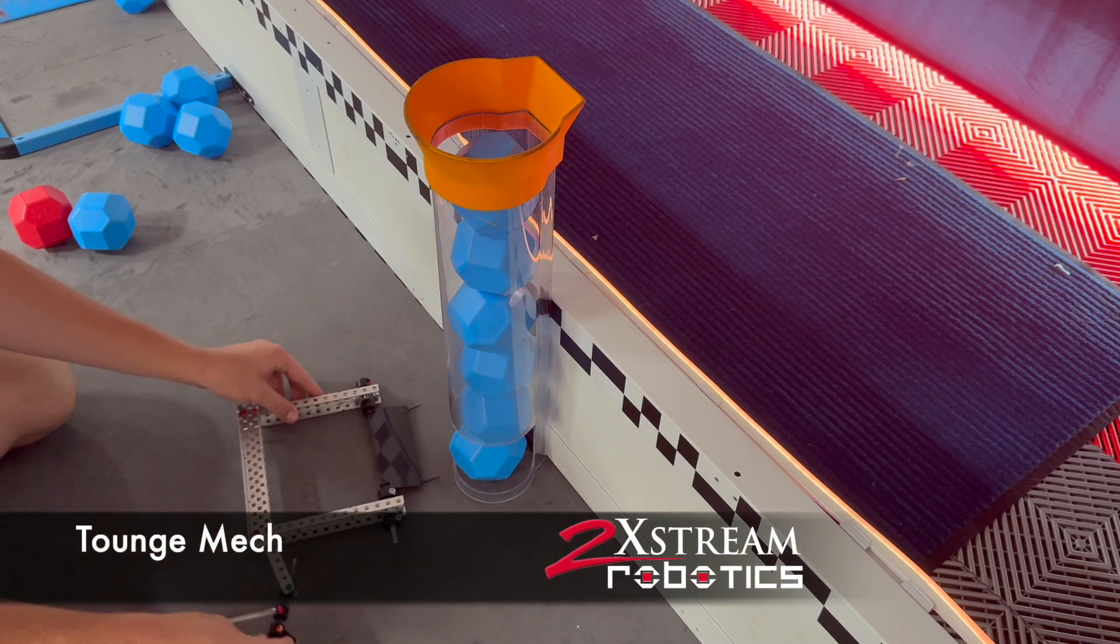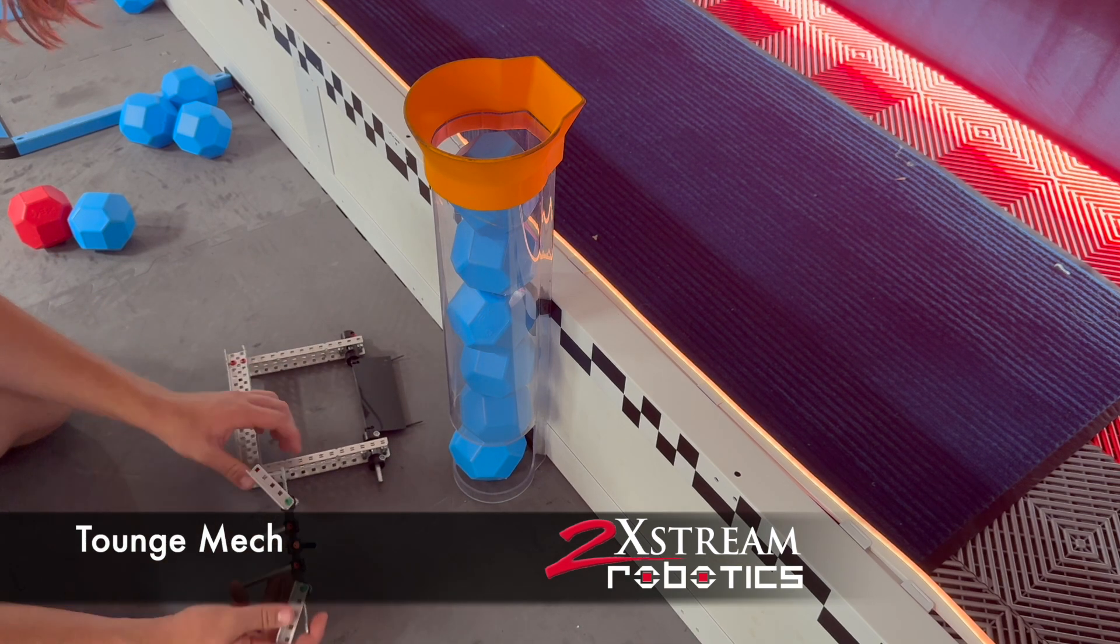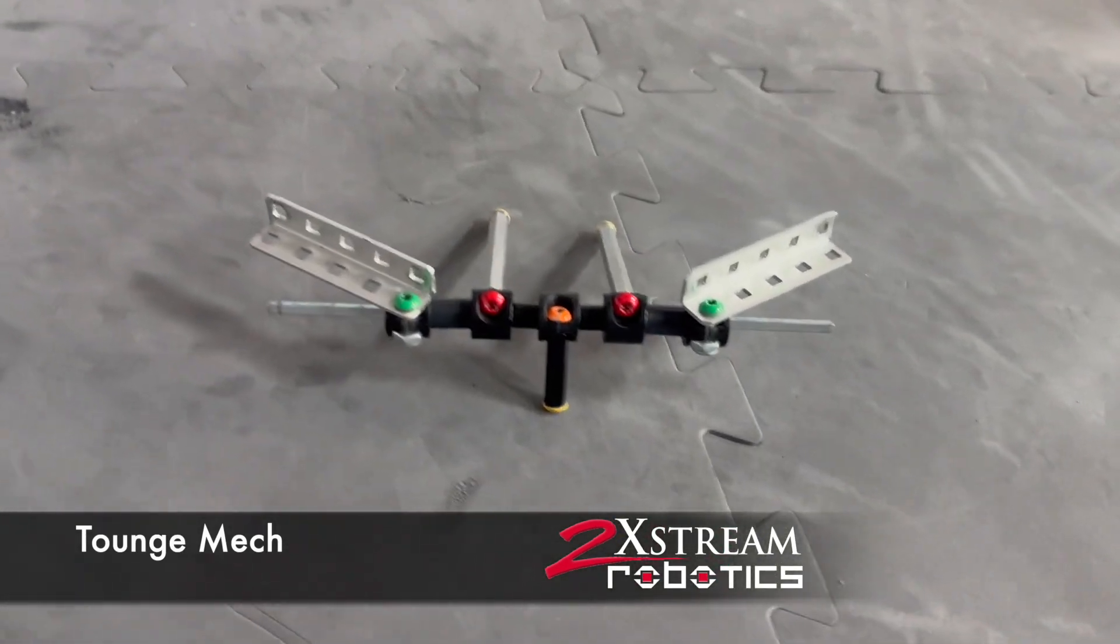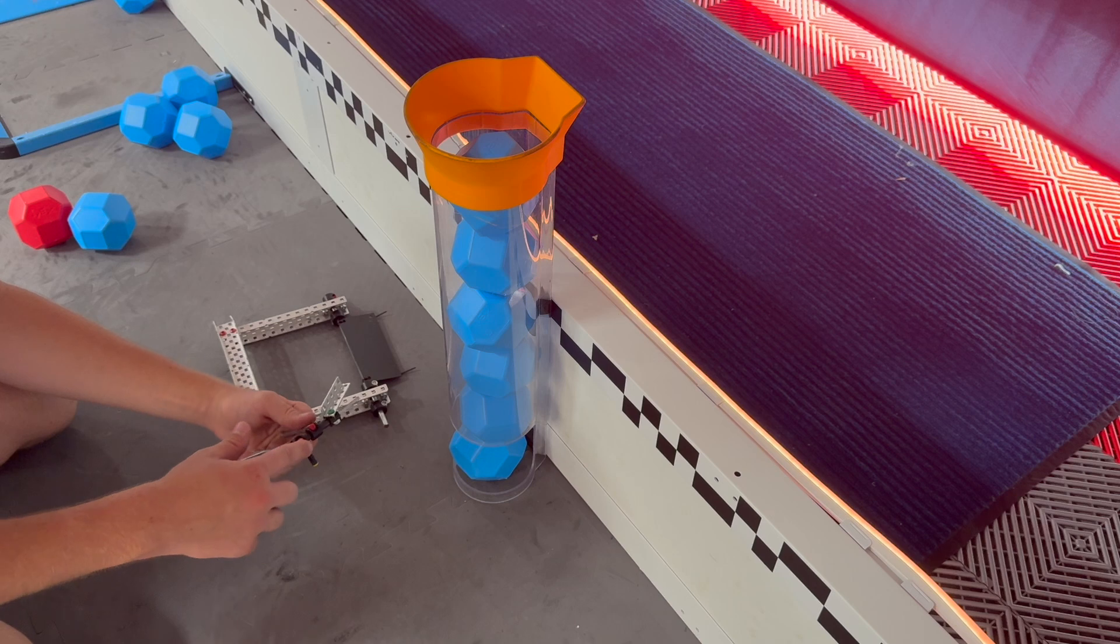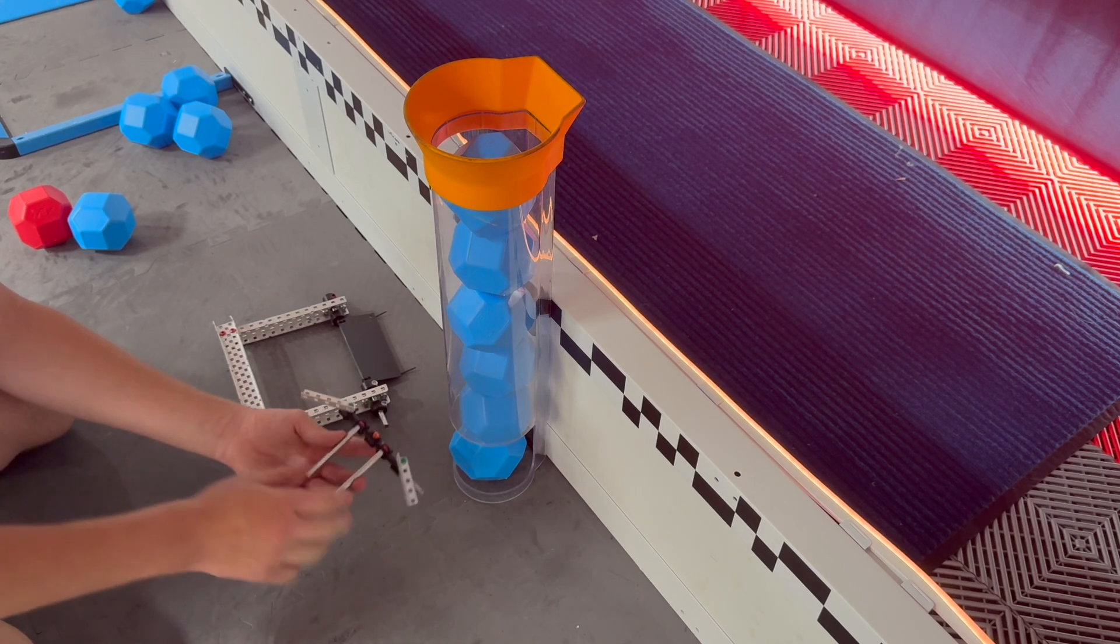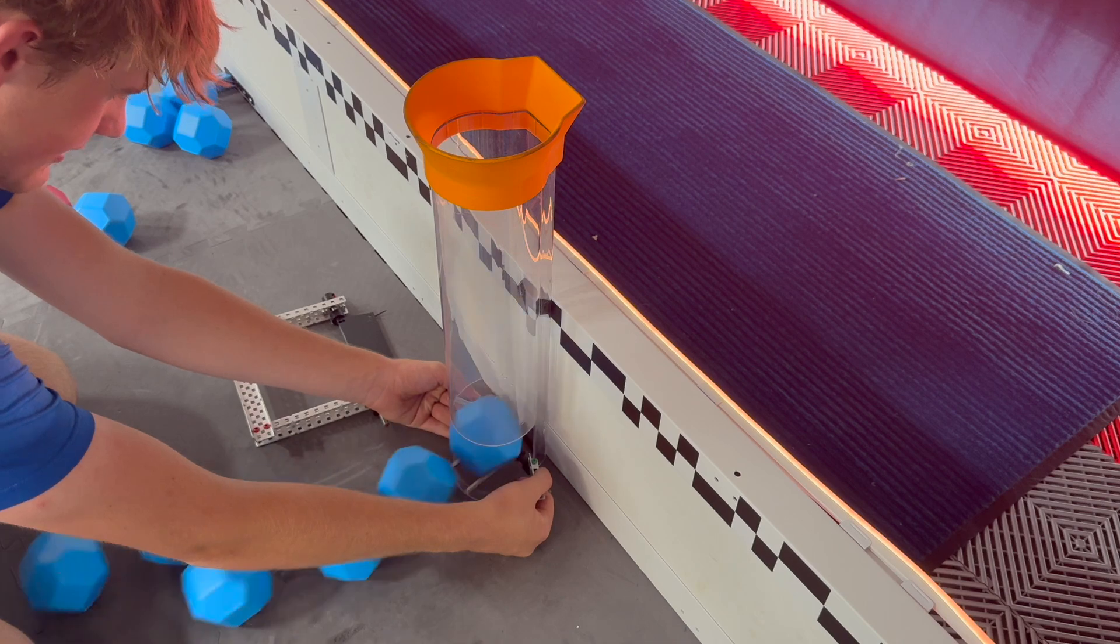So the first mechanism we're going to talk about is a tongue mech. I've seen two pretty common variations of this mechanism, the first one being standoffs and low strength spacers. The simple theory behind this is it pushes the ball up a little bit and then they ramp down. And it works just like that.